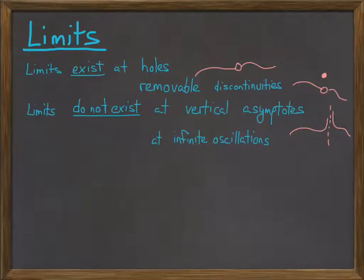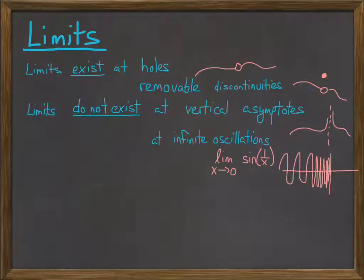And these are problems that look like limit as x goes to 0 of sine 1 over x, where as x gets closer and closer to 0, the function oscillates faster and faster until it gets to that point. So the function doesn't go up to infinity, but it's also not well behaved near 0, so the limit doesn't exist.